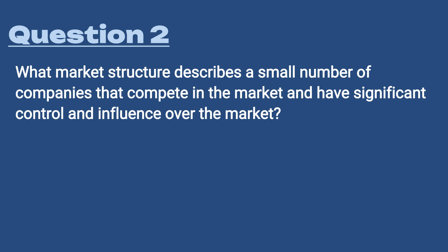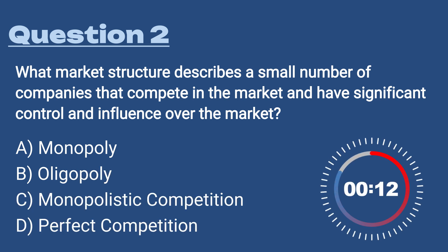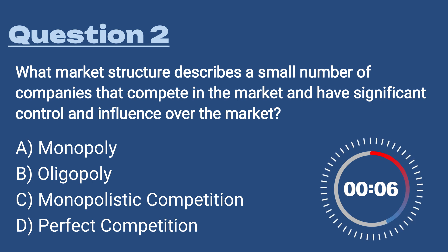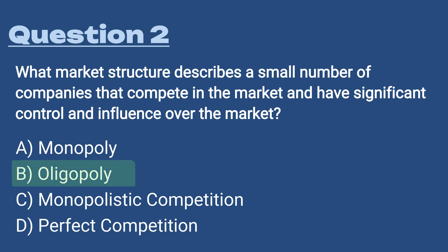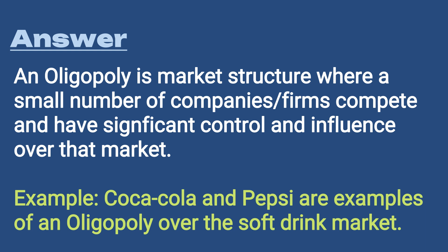Question number two: what market structure describes a small number of companies that compete in the market and have significant control and influence over that market? A) Monopoly, B) Oligopoly, C) Monopolistic competition, D) Perfect competition. The answer is B, oligopoly. A good example would be Pepsi and Coke — they are such dominant players in the soft drink market that it makes it challenging for other companies to get established, but there are multiple companies competing.